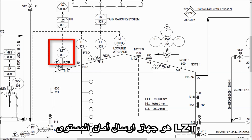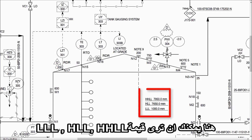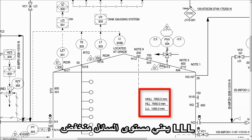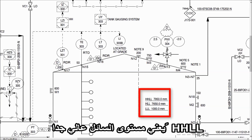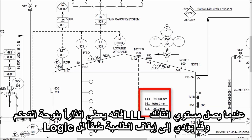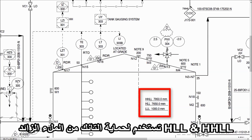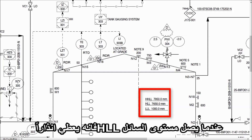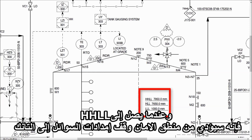LZT is a level safety transmitter. Here you can see the values of LLL, HLL, and HHLL. LLL means low liquid level, HLL means high liquid level, and HHLL means high high liquid level. LLL protects your pump — when the tank level reaches LLL, it gives an alarm on the control panel and, based on the logic configuration, may trigger a switch-off command to the pump. HLL and HHLL are used to protect the tank from overfilling. When the liquid level reaches HLL, it gives an alarm, and when it reaches HHLL, it triggers the safety logic and stops the fluid supply to the tank.